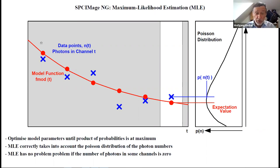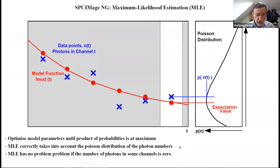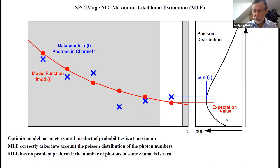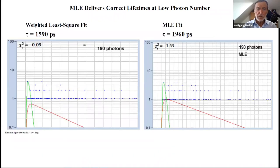The advantage is that MLE correctly takes into account the Poisson distribution of photon numbers, has no problem if the photon number is low, and even has no problem if the photon number in some channels is zero—because for a zero photon number we still get a non-zero probability, so it doesn't mess up our product of probabilities.